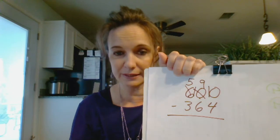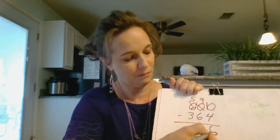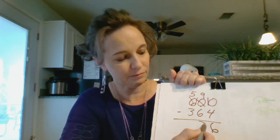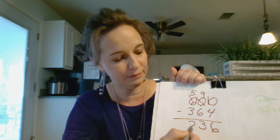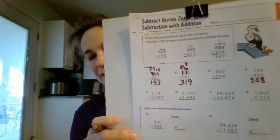Ten ones minus four ones is six. Nine tens minus six tens is three. Five hundreds minus three hundreds is two. Alright, you do the last one and tell me what you get. What answer did you get? Two hundred eight. Okay, mama, if he's not understanding this, you're going to have to slow him down and show him again.